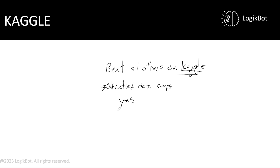So how would I beat it? I would cheat, just like everyone else does. There's a tool that Google has called Vertex AI — it used to be called AutoML Tables for all their structured data problems.